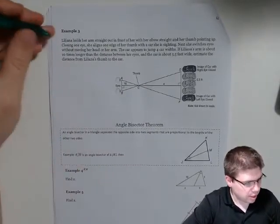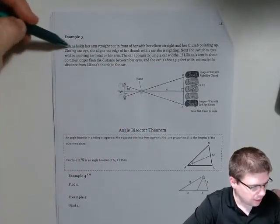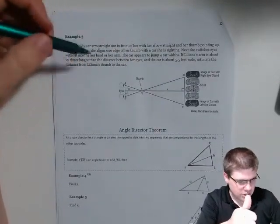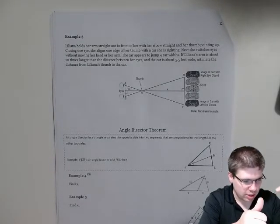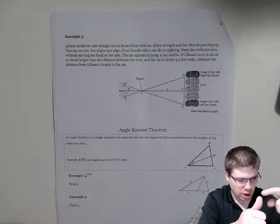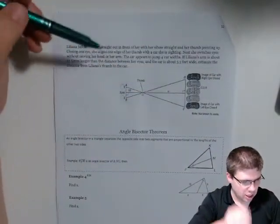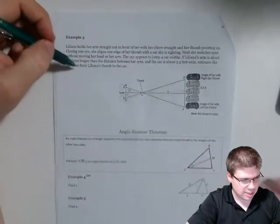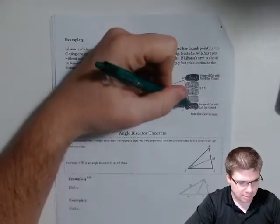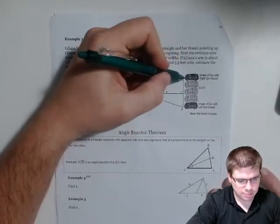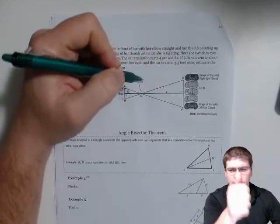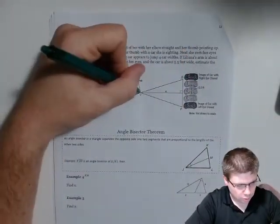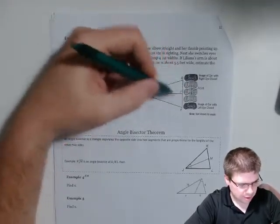On this second page, an interesting problem here. Liliana holds her arm straight out in front of her with her elbow straight and her thumb pointing up. Closing one eye, she aligns the edge of her thumb with the car she is sighting. Next, she switches eyes without moving her head or her arm. The car appears to jump four car widths. If Liliana's arm is about 10 times longer than the distance between her eyes, and the car is about 5.5 feet wide, estimate the distance from Liliana's thumb to the car.